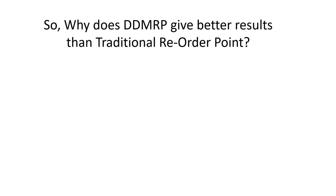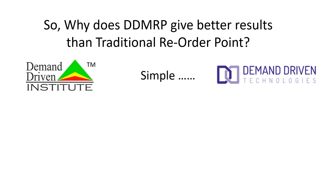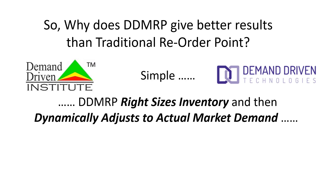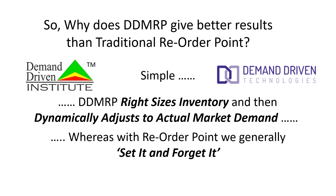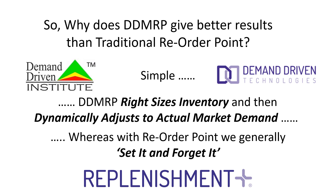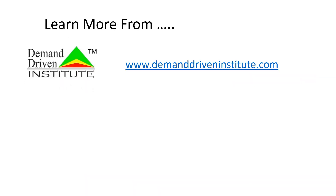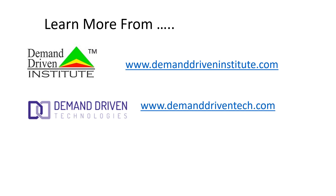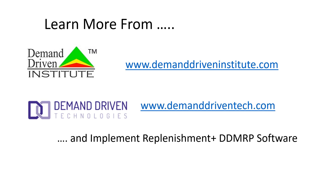Why does DDMRP give us a better result than a traditional reorder point system? Simply, DDMRP right-sizes inventory and then dynamically adjusts the buffers to actual market demand, whereas with reorder point, we generally set it and forget it. Learn more from the Demand Driven Institute, Demand Driven Technologies, and implement Replenishment+ DDMRP software.